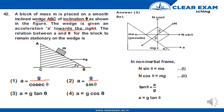The block will remain stationary when the resultant force along the inclined plane is zero. Working in the non-inertial frame and balancing forces, we get the first equation: N sin theta equals ma. The second equation is N cos theta equals mg. Dividing equation one by equation two, N cancels out, giving sine theta upon cos theta, which equals tan theta.